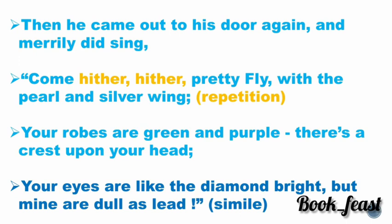Then the spider came out of his door again and merrily did sing: 'Come hither, hither, pretty fly, with the pearl and silver wing. Your robes are green and purple, there is a crest upon your head. Your eyes are like the diamond bright, but mine are dull as lead.' He sings happily, welcoming the fly with more flattery — your wings are silvery and filled with pearl, you are green and purple, you have a crest. The 'hither, hither' repetition is noted as the poetic device of repetition. Here, comparing the fly's eyes to diamond and the spider's eyes to lead is a simile.